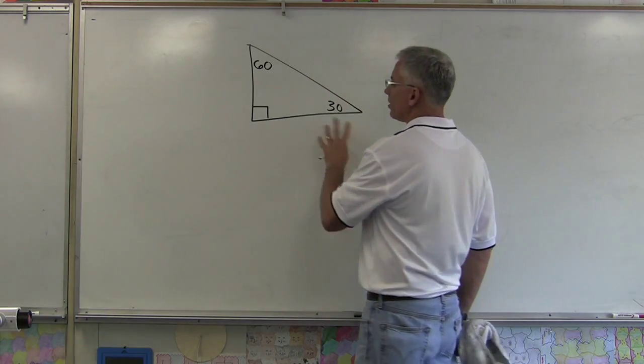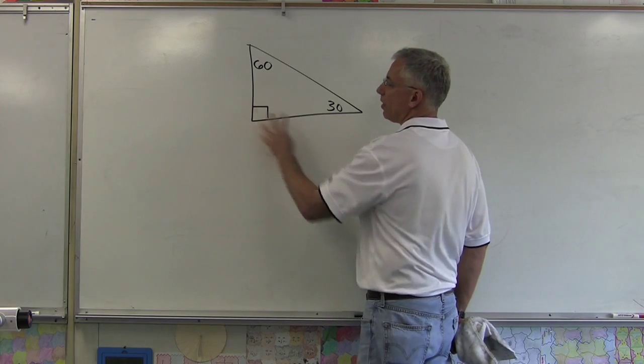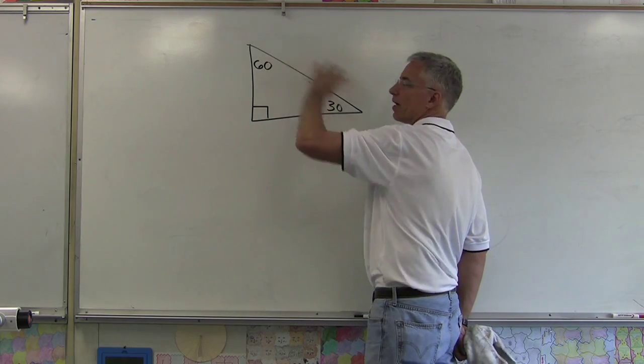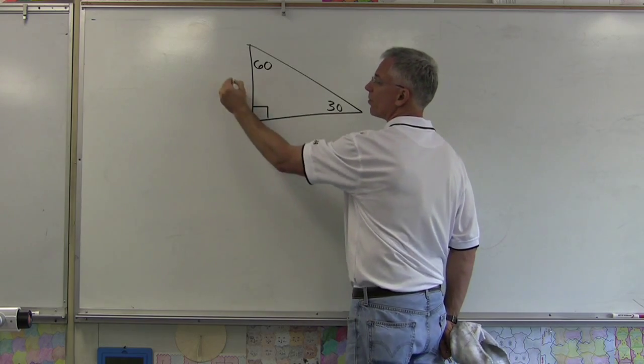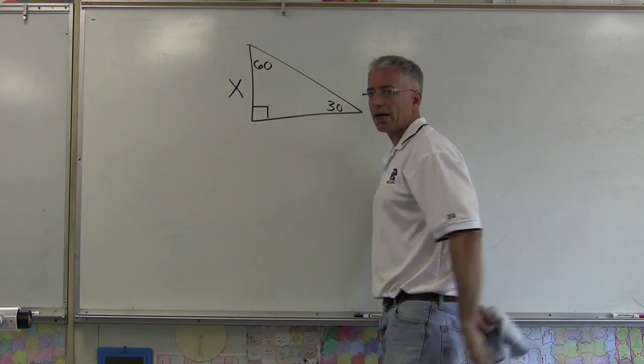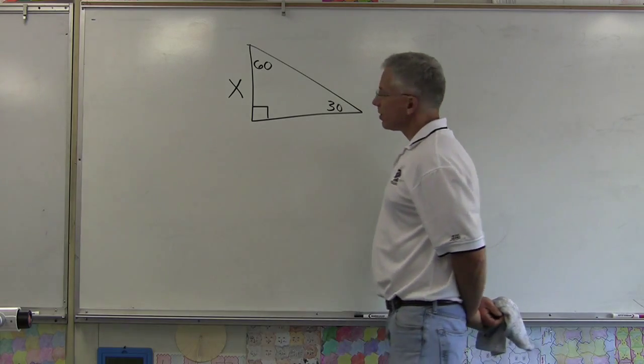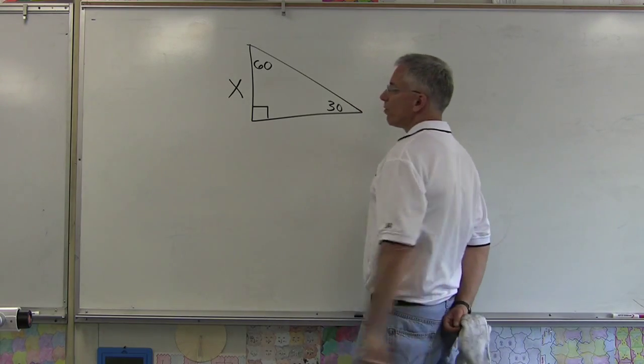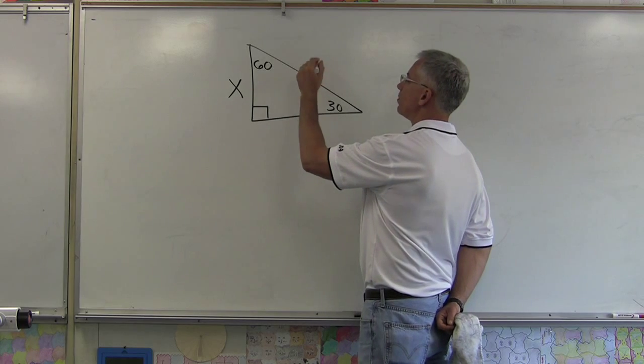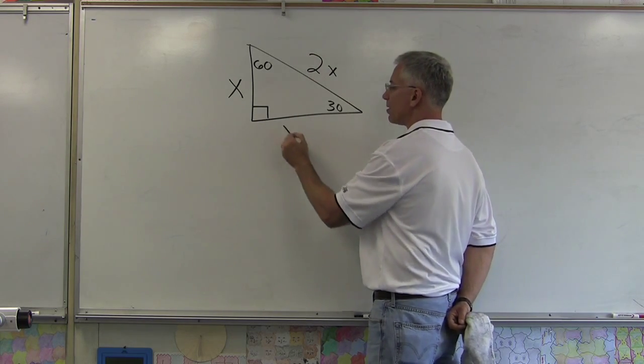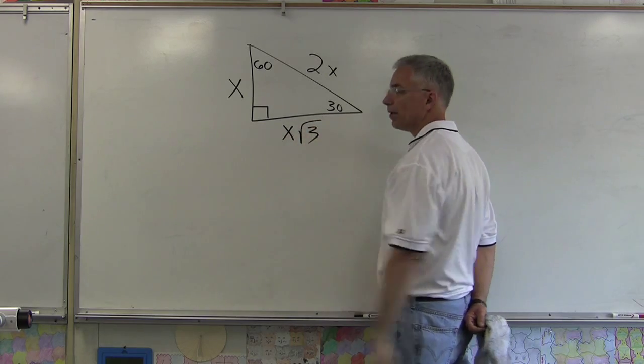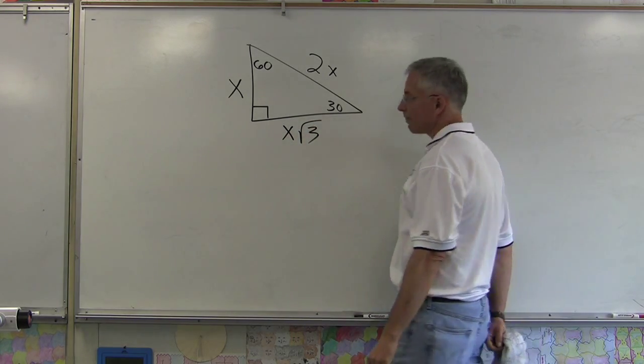Now on a 30-60-90 triangle, you have two legs and a hypotenuse. The hypotenuse is always opposite this right angle right here. Everything revolves around the shortest leg, so I'll call that leg X. On a 30-60-90 triangle, if the shortest leg is X, the hypotenuse is going to be twice that—it's 2X—and then the longer leg is always X√3.